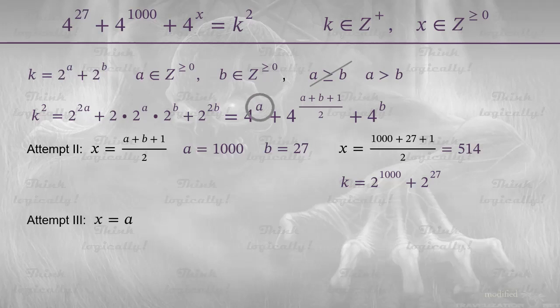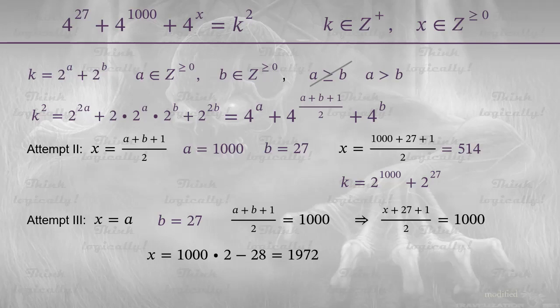x equals a. b is still 27. While a plus b plus 1 over 2 is 1000. This time we replace a with x and b with 27, and find that x equals 1972. This makes a also equal to 1972. So, k equals 2 to the power of 1972 plus 2 to the power of 27. This completes the second solution.